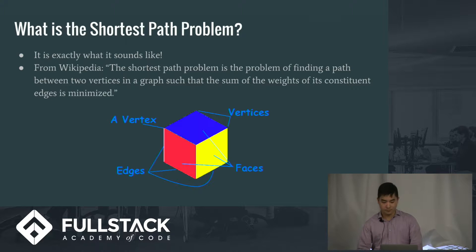So here's a graph to help you understand it better. You can think of vertices as points and you can think of edges as lines. And so what the shortest path problem is, is you're trying to find the shortest distance between two points.